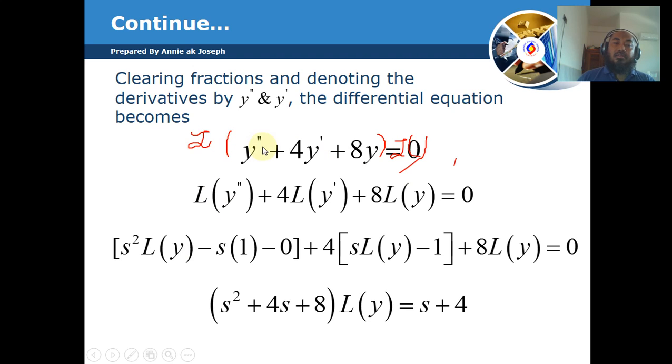L{y''} + 4L{y'} + 8L{y} = 0. The Laplace of y'' is equal to s²L{y} - s(1) - 0, plus 4[sL{y} - 1] + 8L{y} = 0, which gives (s² + 4s + 8)L{y} = s + 4.